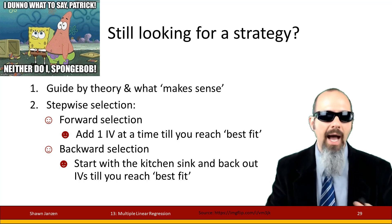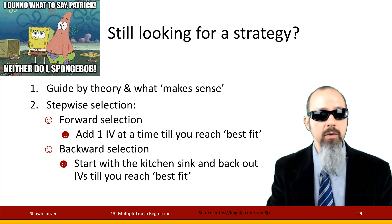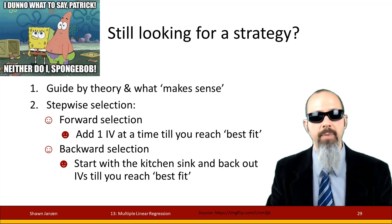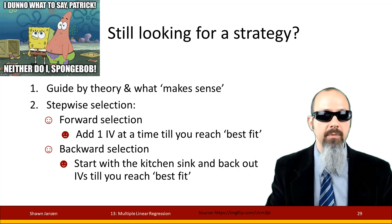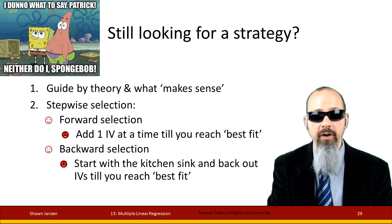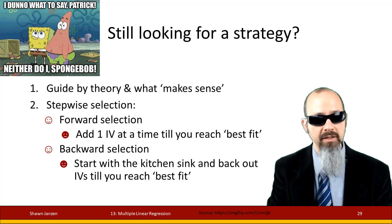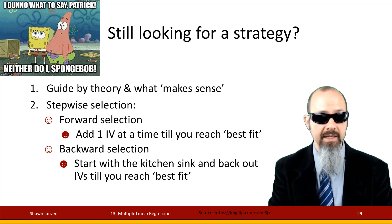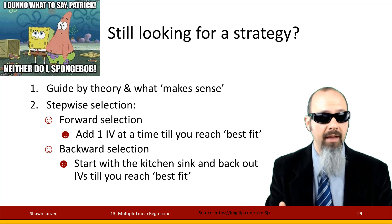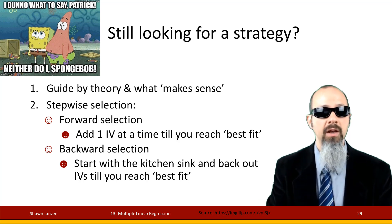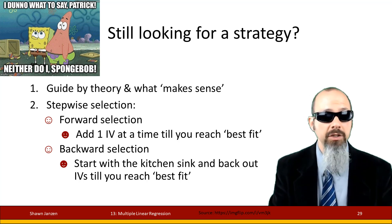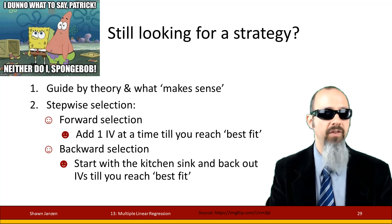You're still maybe wondering how to figure out how to use them and which predictors to include. Guide yourself by theory — guide yourself by what makes sense. Put into the model the sorts of variables you would expect to help explain your dependent variable. They could be primary variables of interest — core fundamentals that help explain why something is the way it is — or control variables added to account for extra variation.